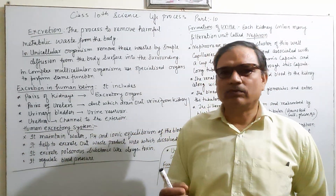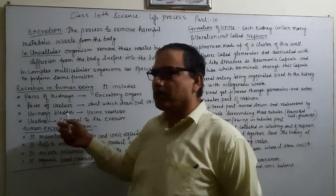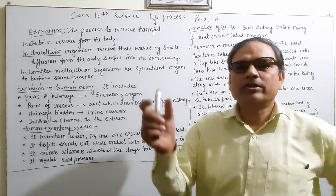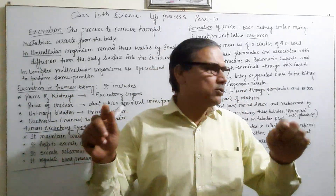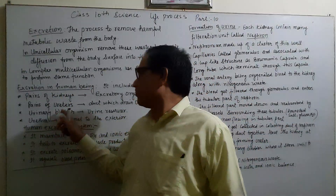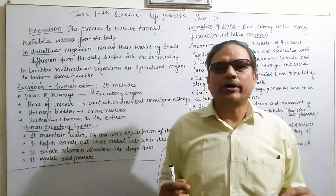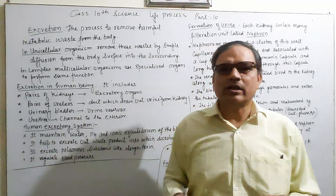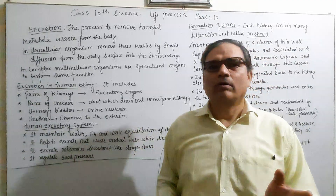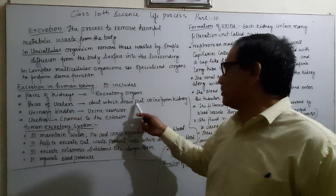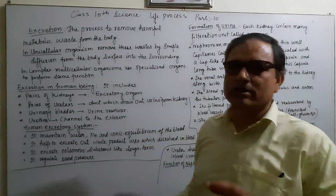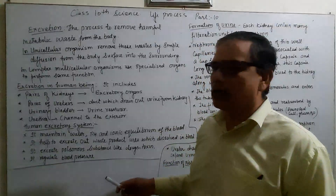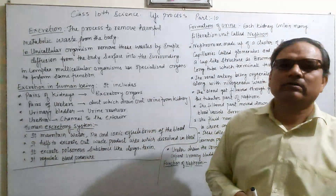The ureter is a tube-like structure — one on the right and one on the left — attached to the kidney. Urine and nitrogenous waste filtered from the blood by the kidney pass through the ureter to the urinary bladder. The urinary bladder is a reservoir — a large vessel — which stores the urine.